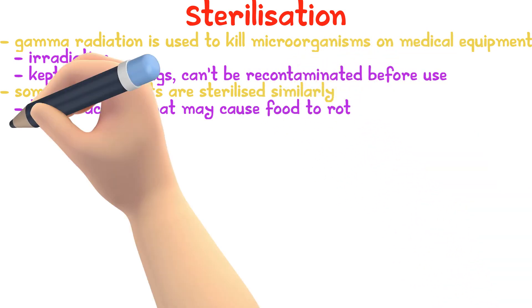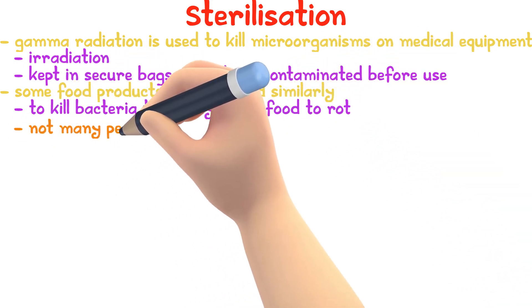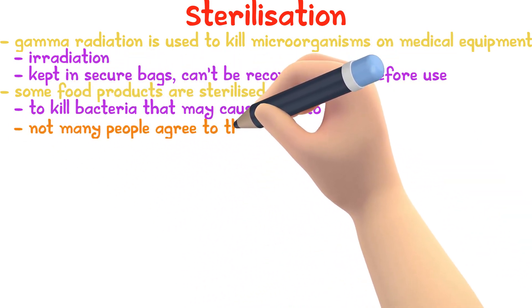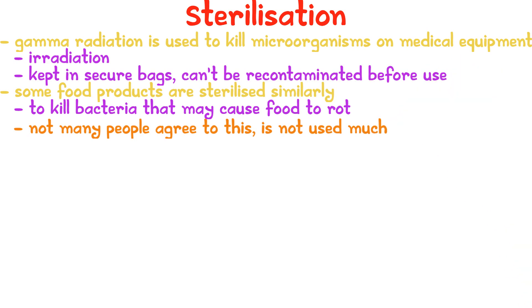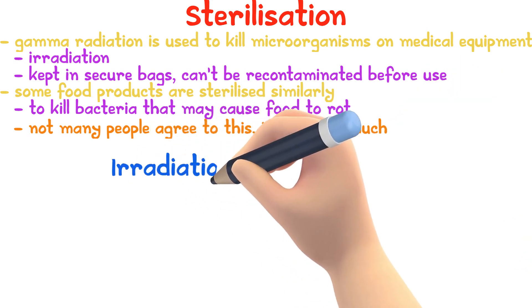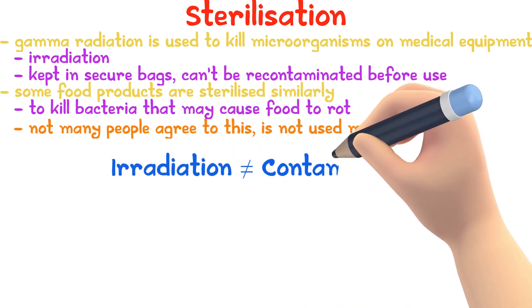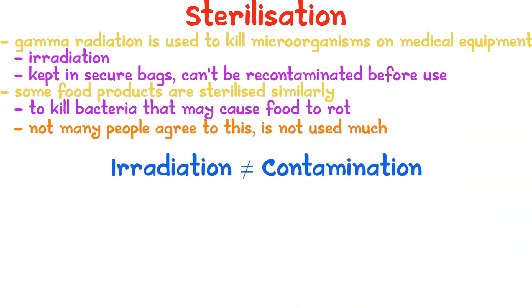However, not many people agree to this and it is not used much. This irradiation process is not to be confused with contamination. Irradiation is a deliberate process, whereas contamination is usually accidental.